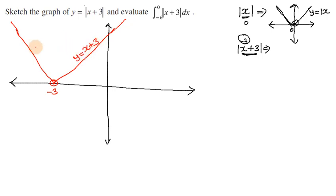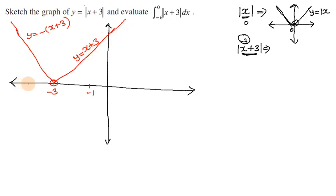On the right side of minus 3, y is equal to x plus 3, which is positive. On the left side, y is equal to minus of x plus 3, which is the negative function. For example, putting x equal to minus 1 gives minus 1 plus 3 equals 2, which is positive. Putting x equal to minus 4 gives minus 4 plus 3 equals minus 1, which is negative. So the left side is the negative function and the right side is the positive function.